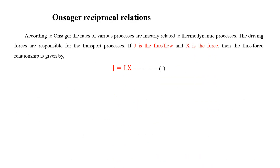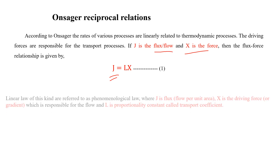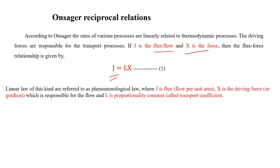In the Onsager Relationship, according to Onsager, the rates of various processes will be related to the driving force. The rate can be considered as flux or flow, which is directly proportional to the driving force. J is flux or flow per unit area, X is the driving force or gradient — gradient means difference — and L is the proportionality constant.